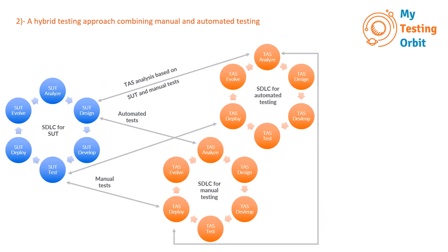The second approach is a hybrid testing approach combining manual and automated testing, where SUT and TAS are synchronized using both. Manual tests can precede automation or run alongside it. When manual tests are conducted before automation, the initial testing is done manually, allowing testers to explore and understand the application thoroughly before automating — especially useful when the application's functionality is evolving rapidly. When manual and automated tests are used together, certain aspects of testing are performed manually while others are automated.